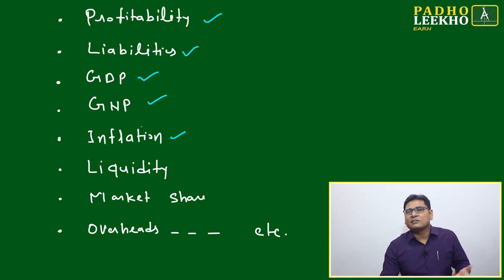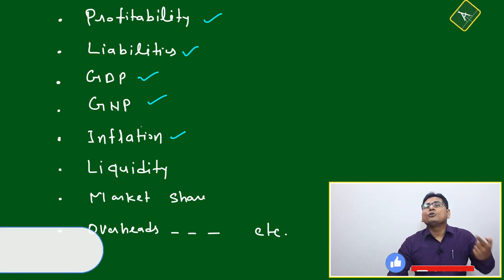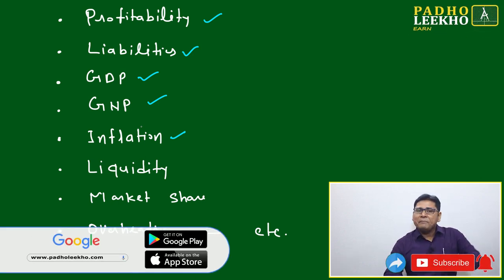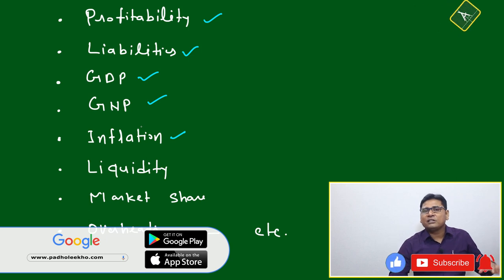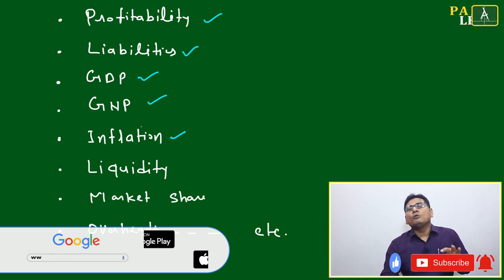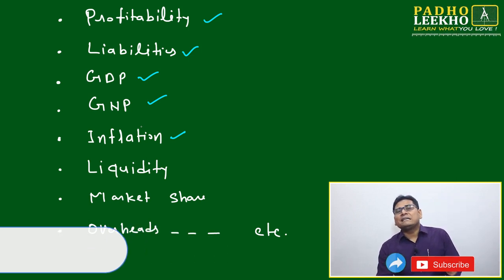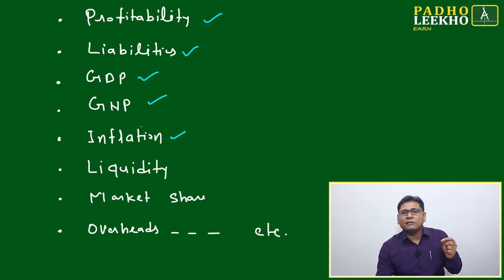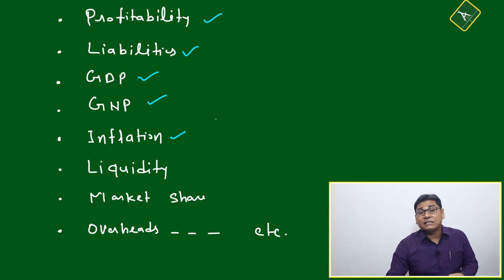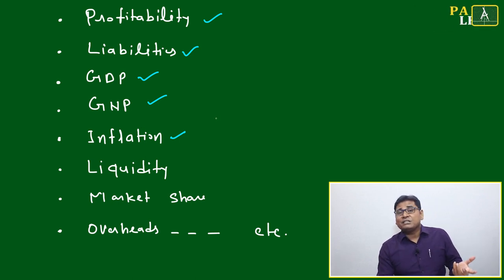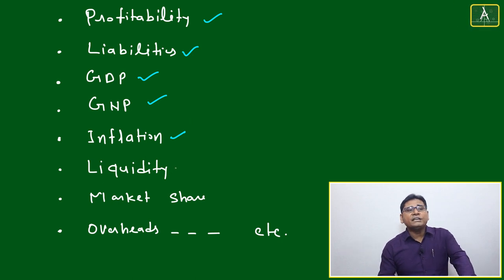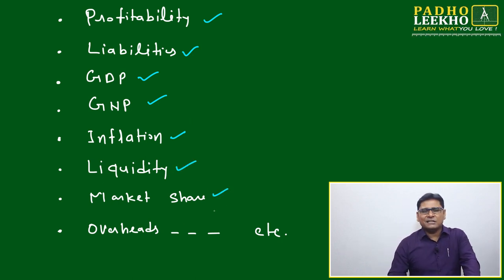Economics and commercial terminology will be useful for solving DI questions. But once you go to round two exams like GDPI, it may relate to history, geography, political science, constitution, philosophy, or psychology — almost all fields. If you know the fundamental or basic terminology across subjects, you will find it much easier to tackle those rounds. After market share, there are also overheads, rate of return, CAGR, and many other terms.